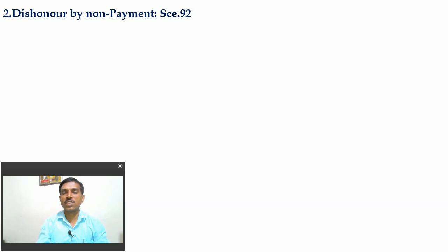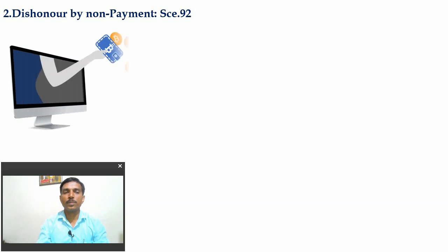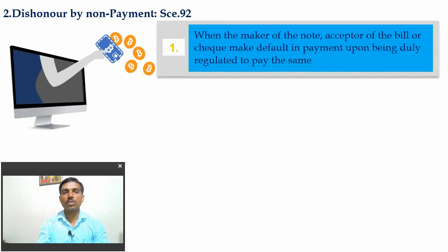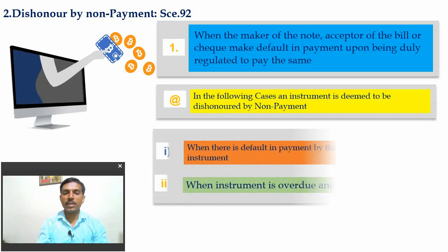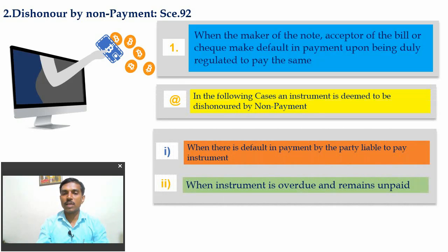Dishonored by non-payment under Section 92: all negotiable instruments — the promissory note, bill of exchange, and cheque — are dishonored by non-payment under Section 92. When the maker of the note, acceptor of the bill, or the cheque-maker defaults in payment upon being duly required to pay the sum. The instrument is deemed to be dishonored by non-payment when there is a default in payment by the party liable to pay, or when the instrument is overdue and remains unpaid.